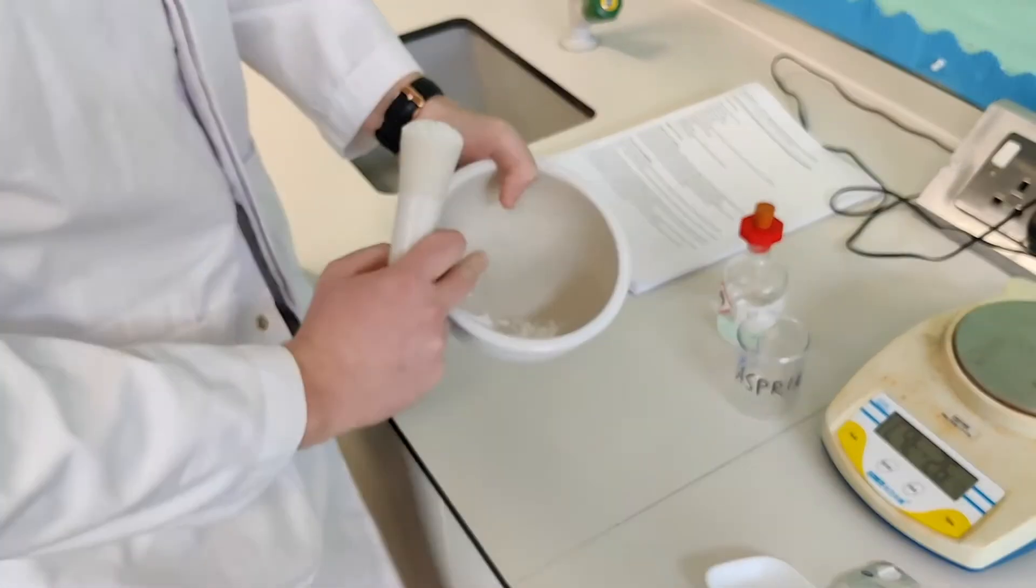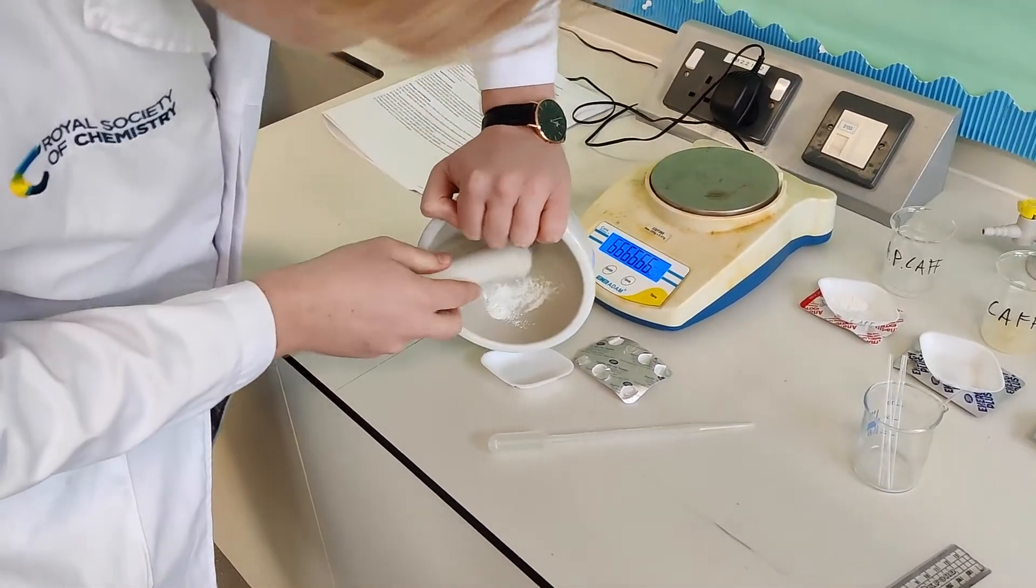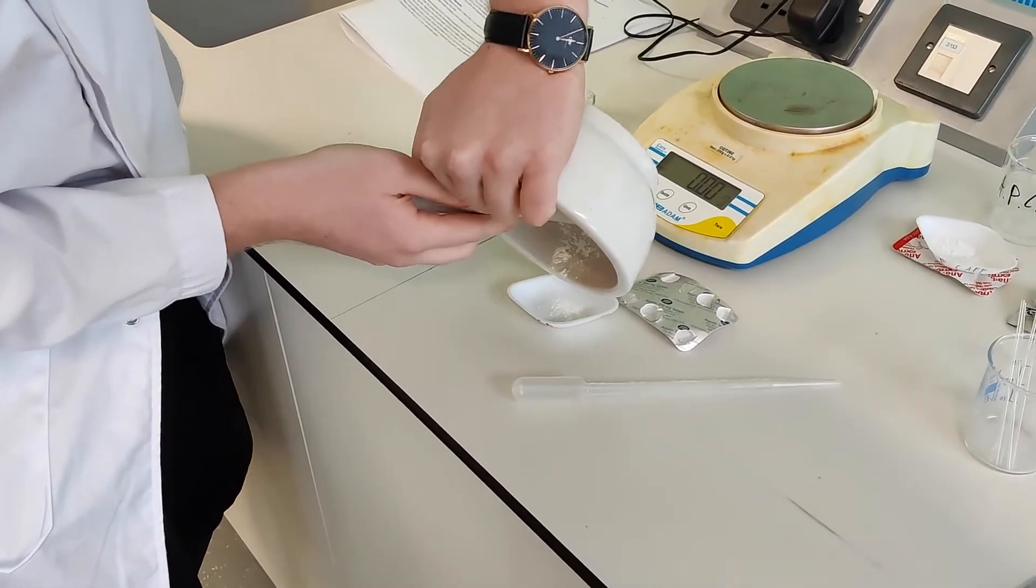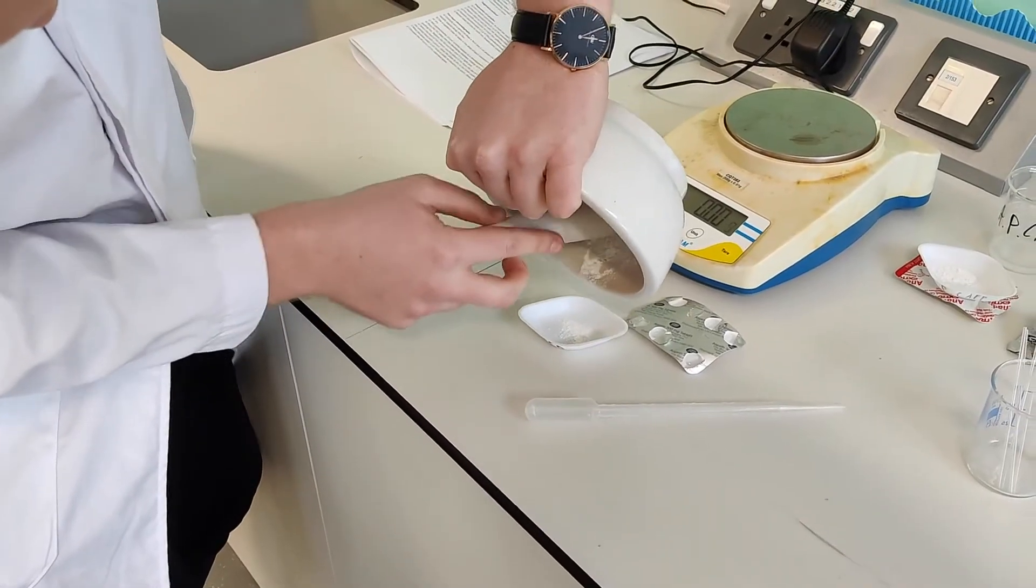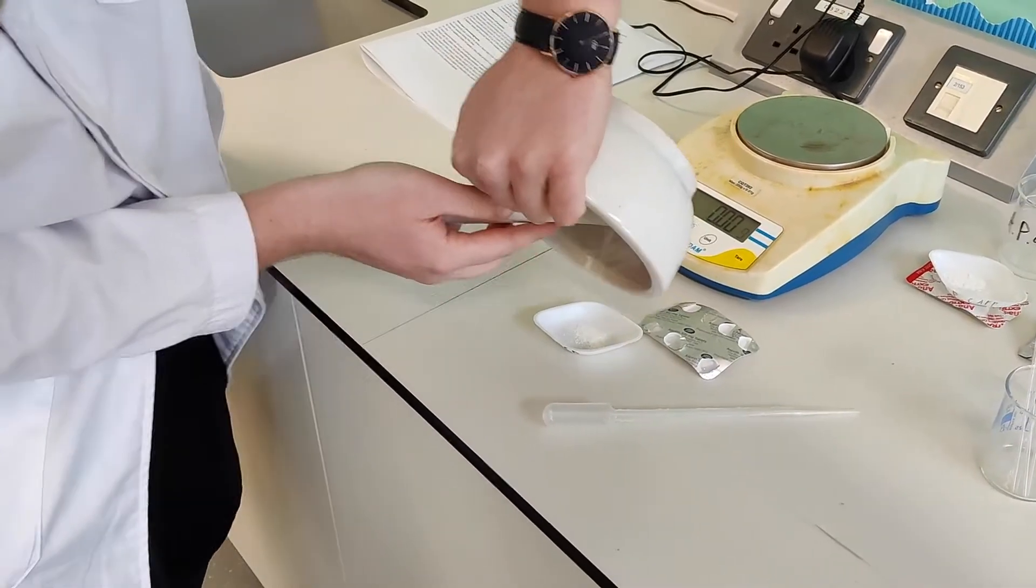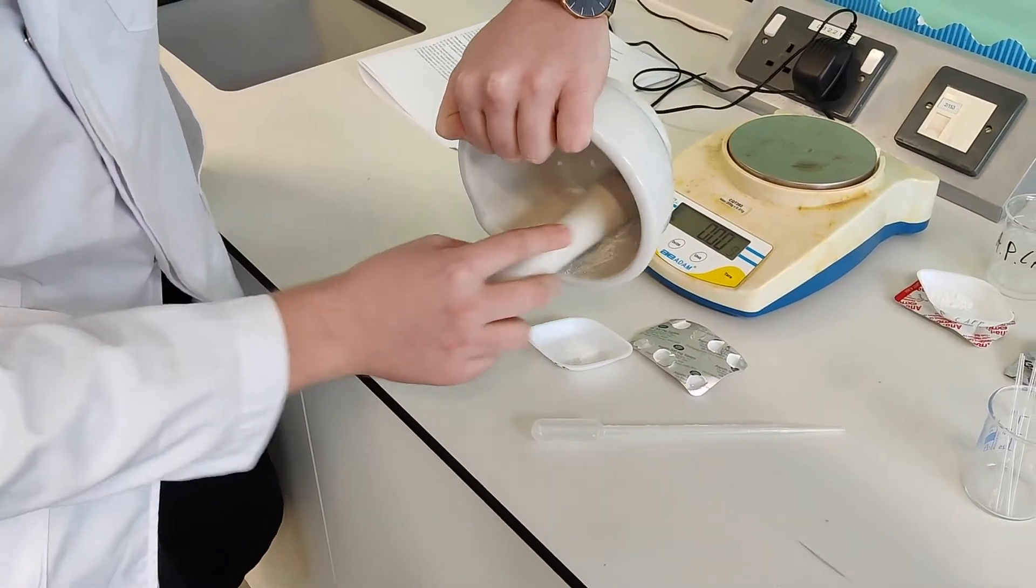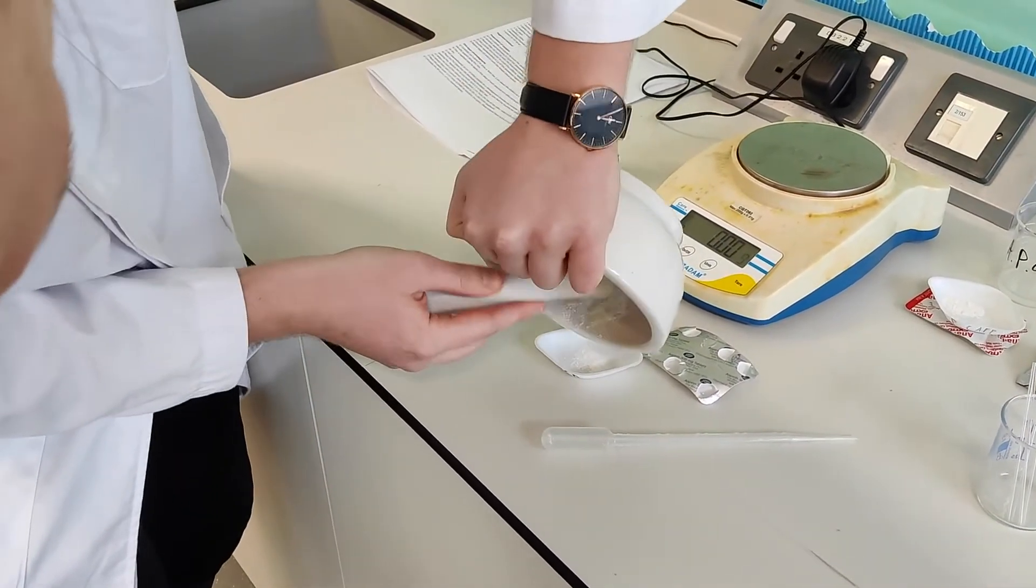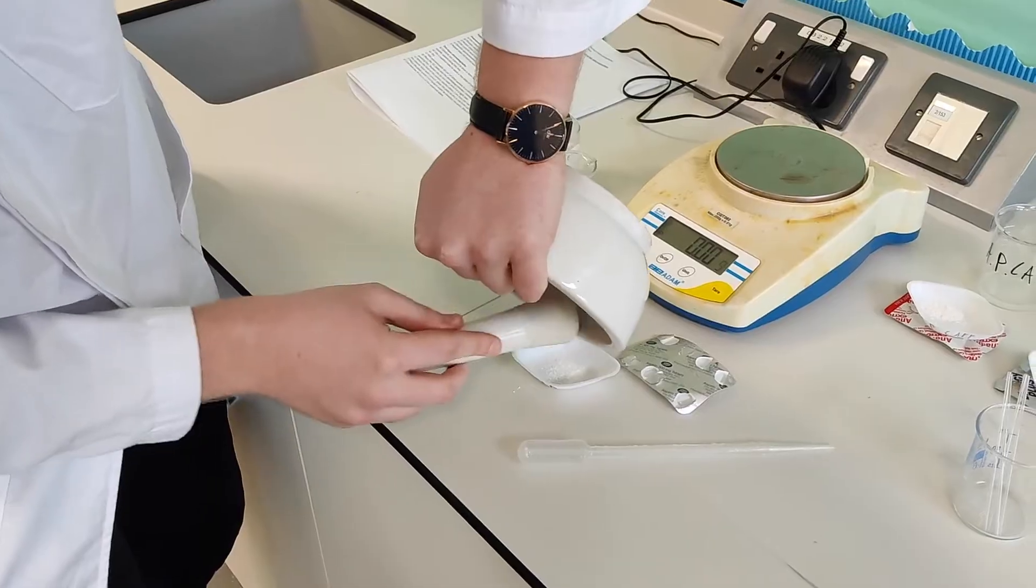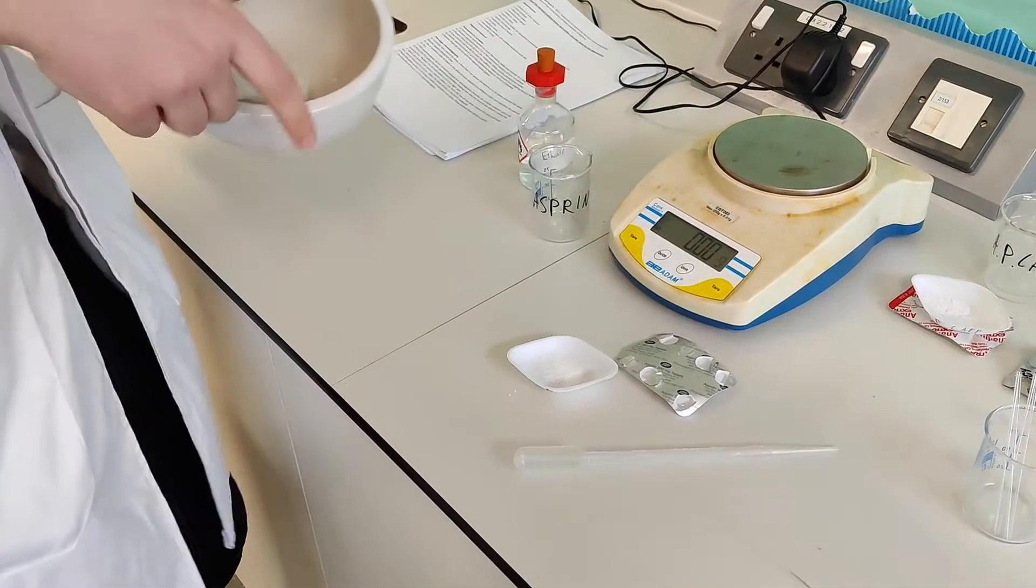So I'm going to place this aspirin, this crushed aspirin, into this weighing boat. The reason why I'm doing this is because I have more control of how much aspirin is actually placed into the beaker. It's quite hard, as you can see now, to control the amount of aspirin. We can see that it's quite difficult. It comes out from all sides. So it's a good idea to get it into the weighing boat first.